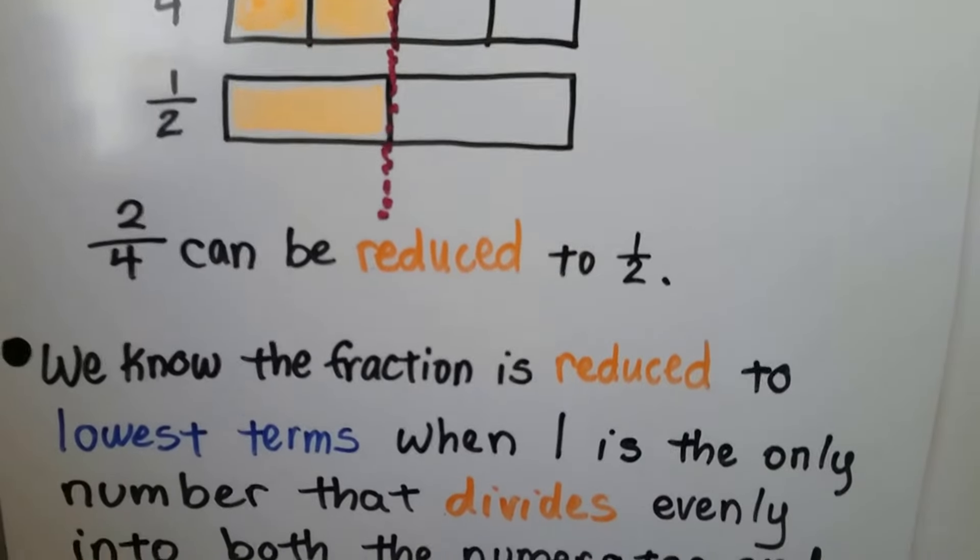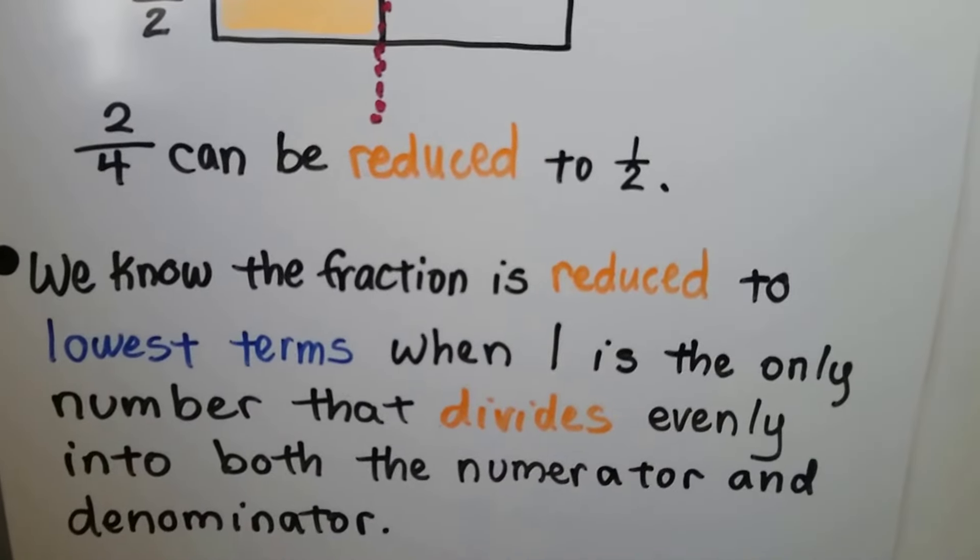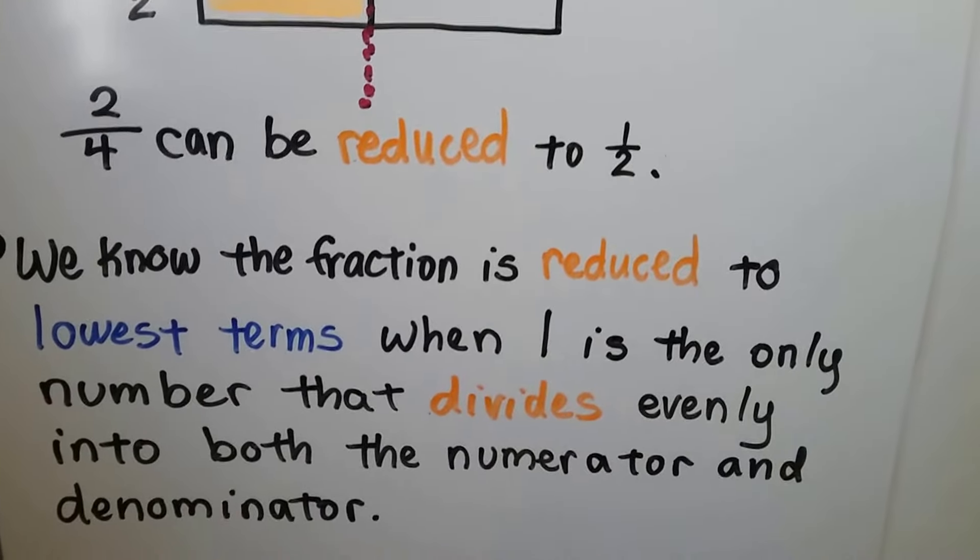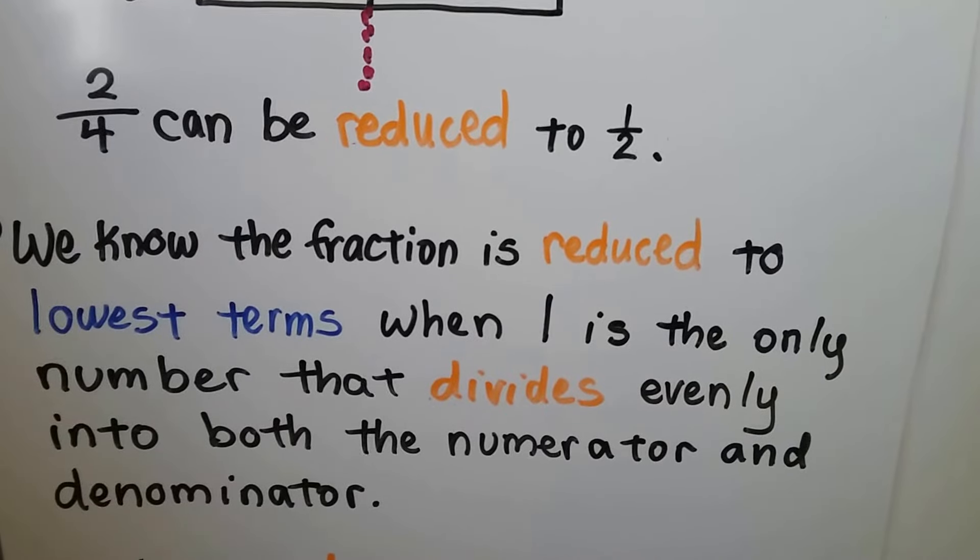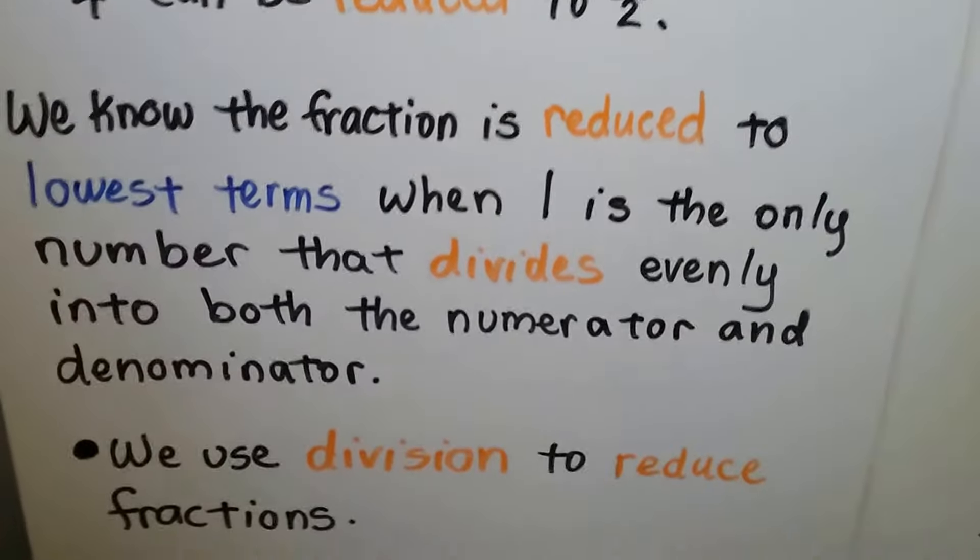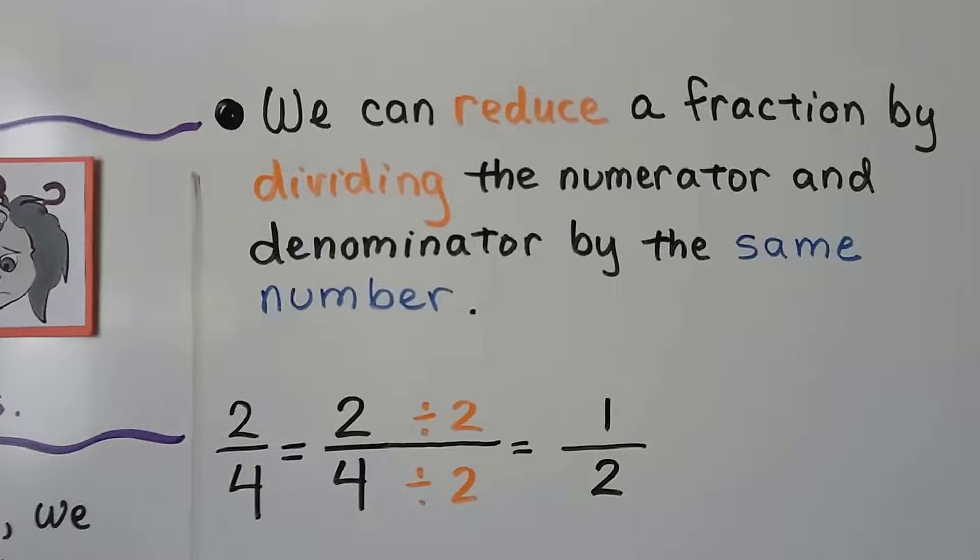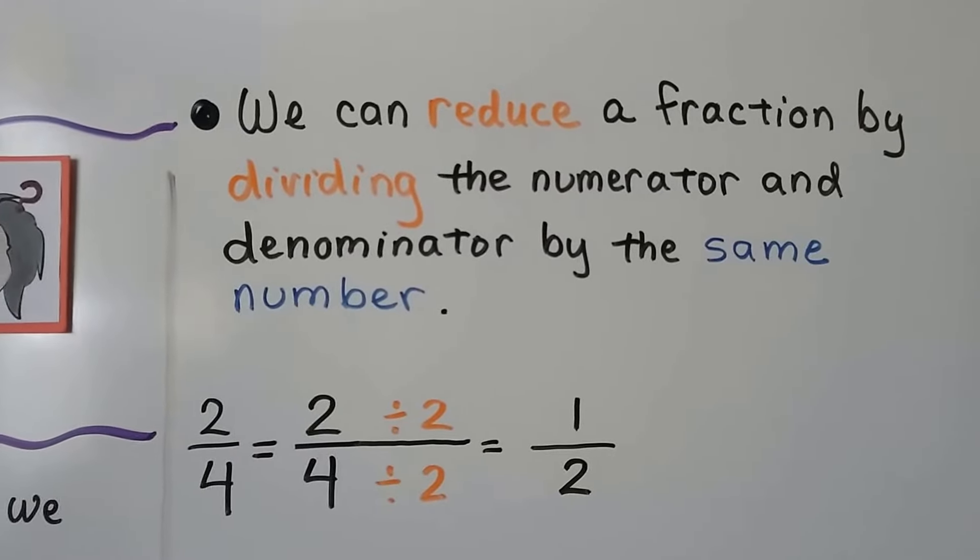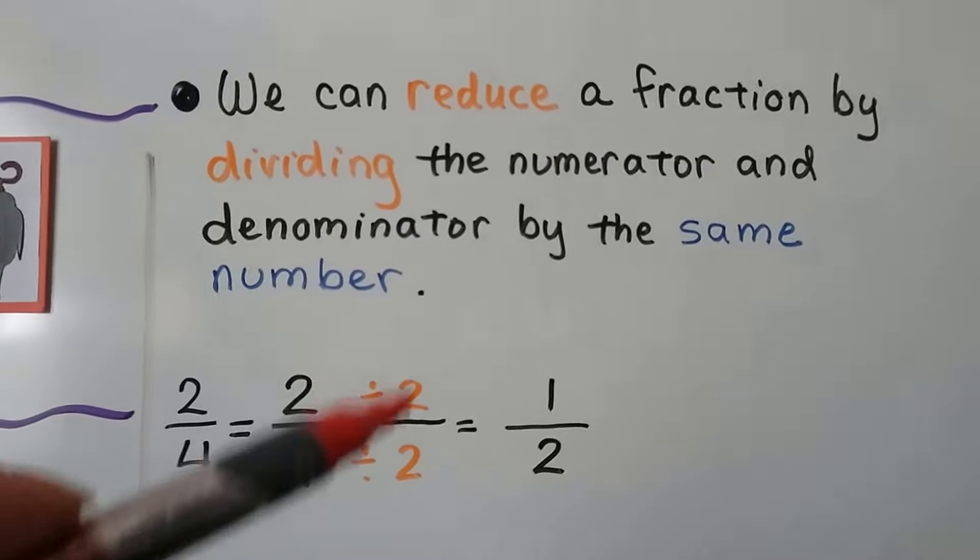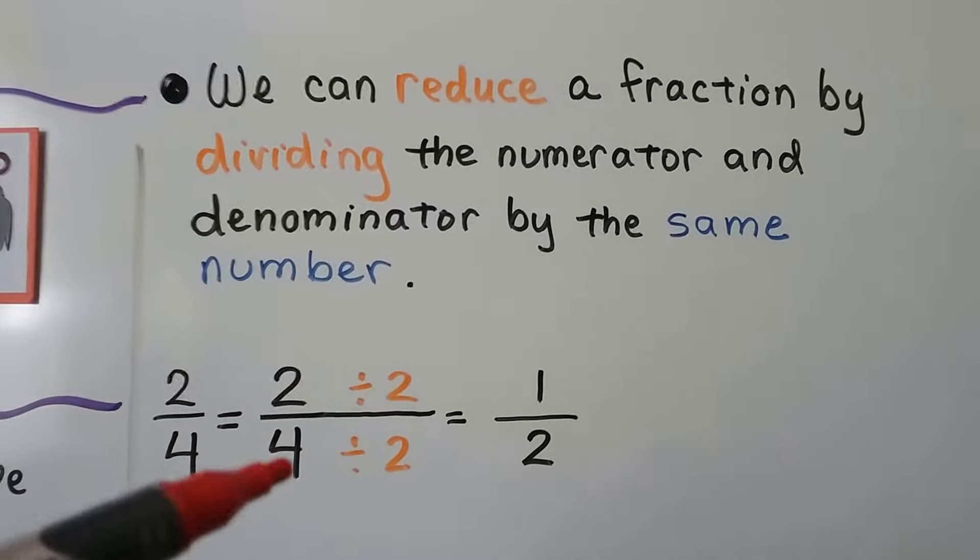We know the fraction is reduced to lowest terms when 1, the number 1, is the only number that divides evenly into both the numerator and denominator. So we're going to use division to reduce fractions. And we can reduce a fraction by dividing the numerator and denominator by the same number.